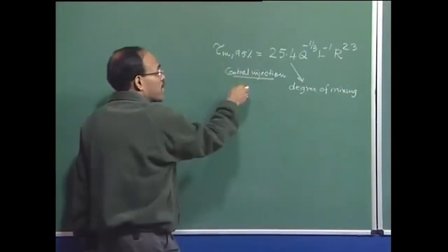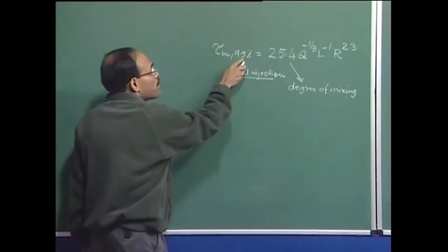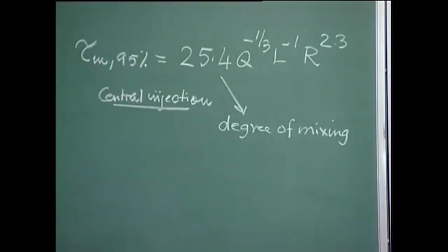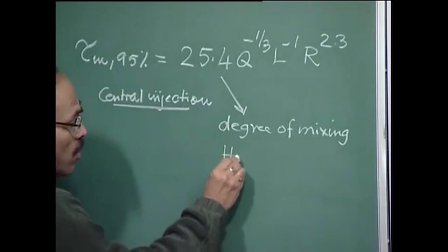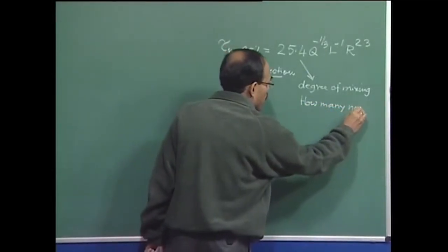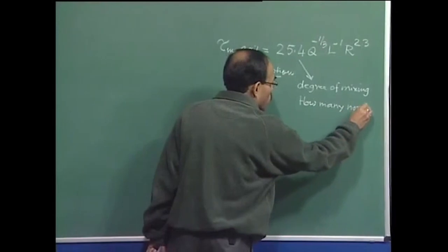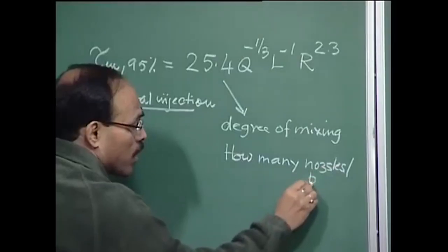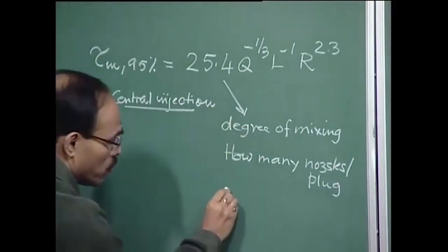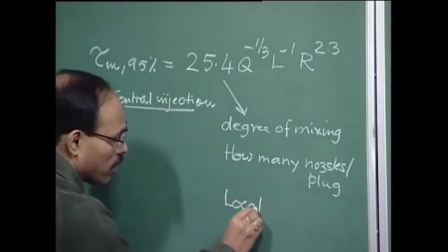For example, if I say that it is 99% mixing, in that case obviously this constant is not going to be the same — it is going to assume a much larger value. It also depends on how many porous plugs or nozzles are present, and it also depends on the location of the plug.